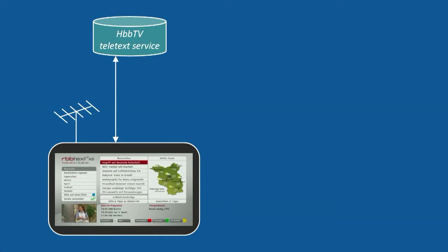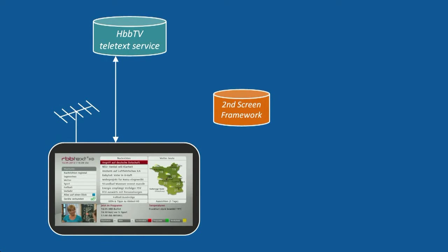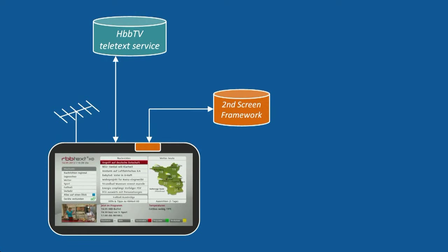If we want to connect to a tablet, we make use of the second screen framework, which is hosted on a separate web server. The Teletext application loads a module from the second screen framework. This module tells the Teletext application that no device has been connected yet to the TV set, so the Teletext starts another module from the framework which handles the first device connection. This module assigns a new device ID to the TV set, which is stored in a local cookie.